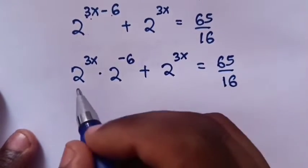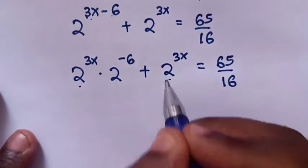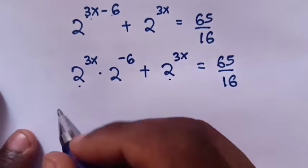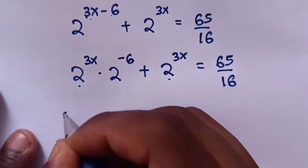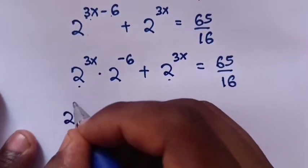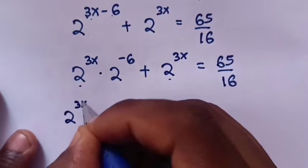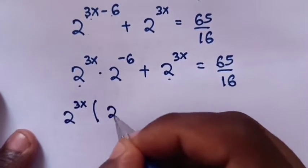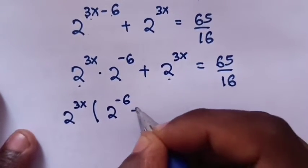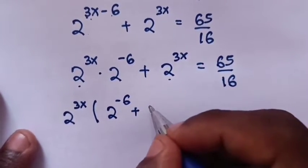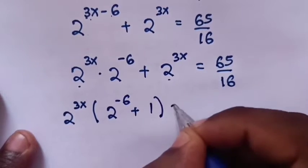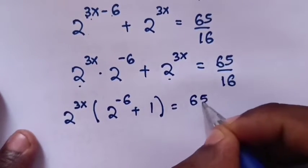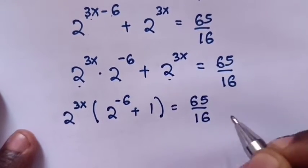Next step: 2^(3x) is common, so we factor it out of the bracket. It becomes 2^(3x) × (2^(-6) + 1) = 65/16.